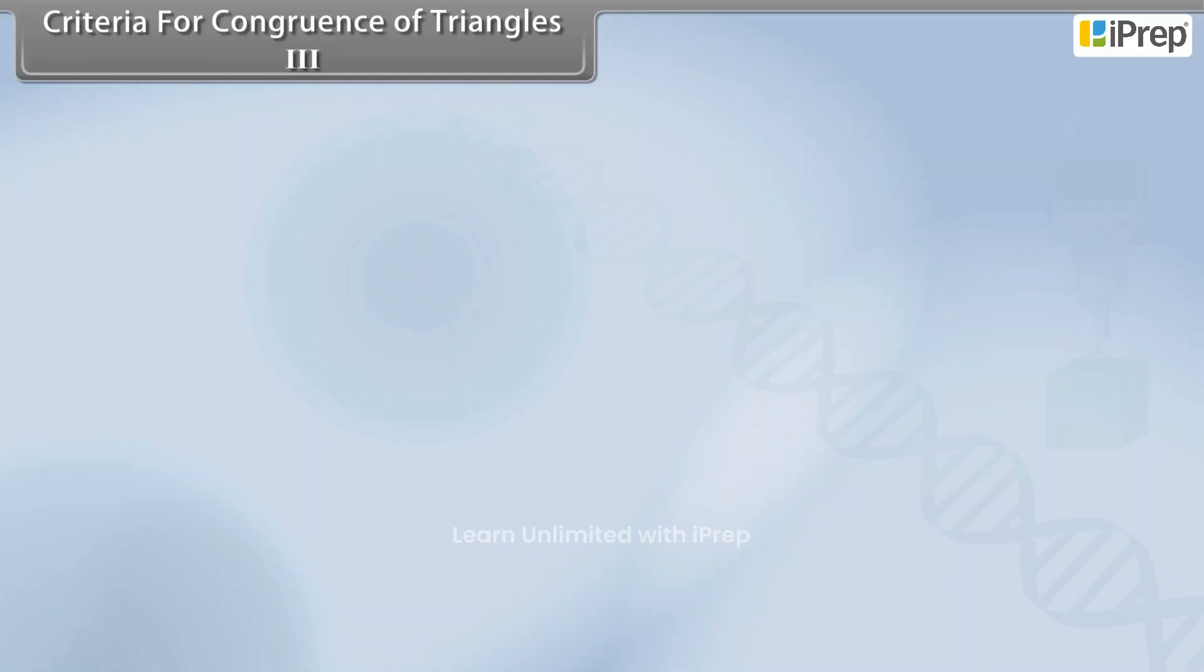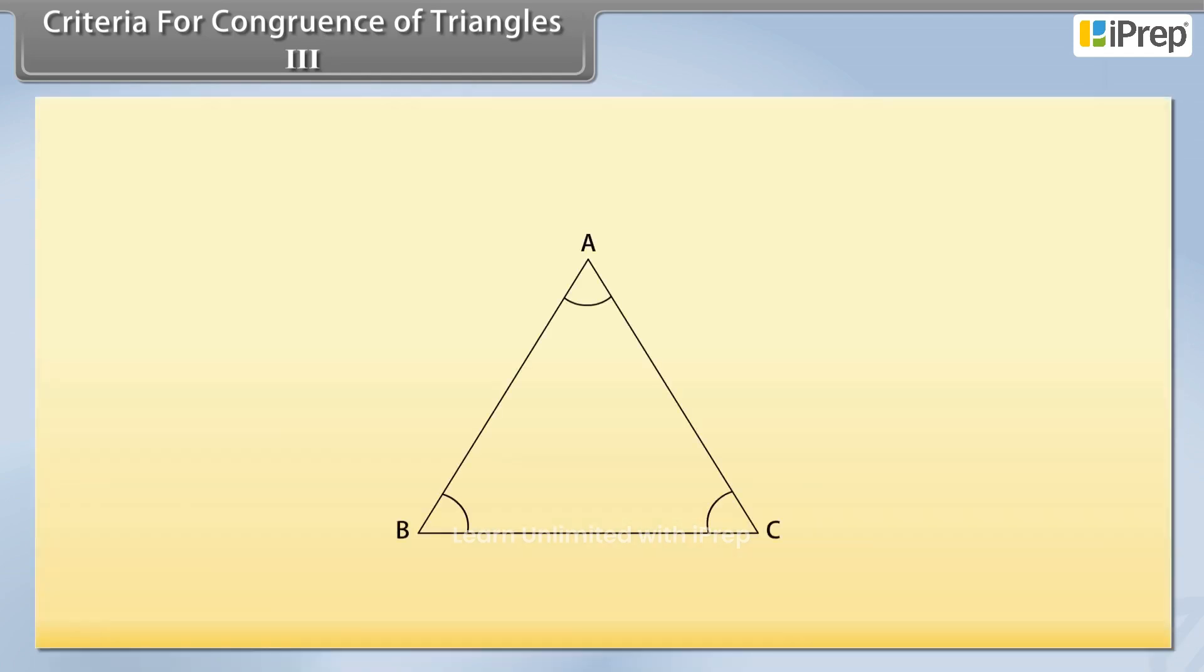Criteria for Congruence of Triangles 3. In order to explore another criterion, we again take a triangle ABC. Now take three thin sticks equal in length to sides AB, BC and CA of triangle ABC.